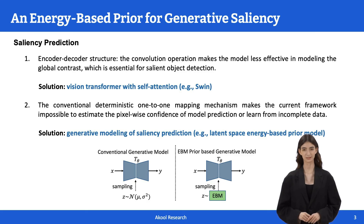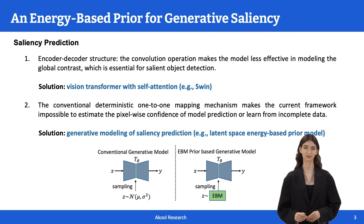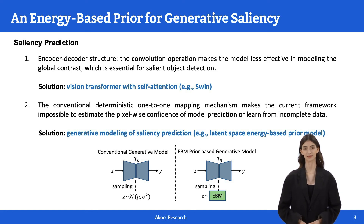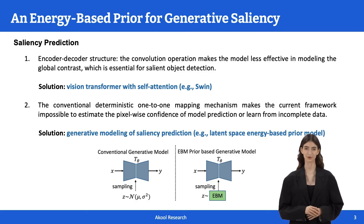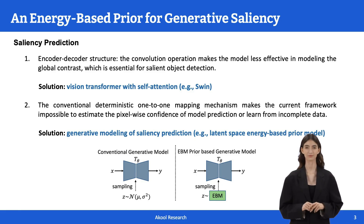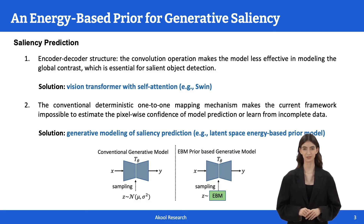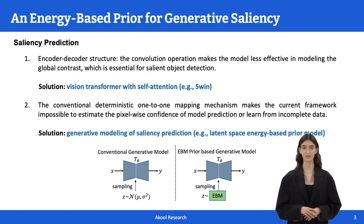Two main issues exist in the conventional deep saliency frameworks. One, the sliding window-based convolution operation makes the deep saliency model less effective in modeling the global contrast, which is essential for salient object detection. Two, the one-to-one deterministic mapping, or regression, mechanism makes the current framework impossible to estimate the pixel-wise confidence of model prediction. Also, deterministic methods usually do not have stochastic property, making it hard to learn from incomplete data.